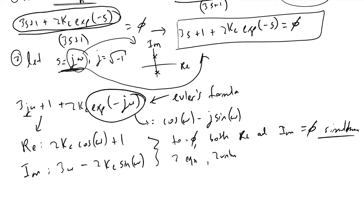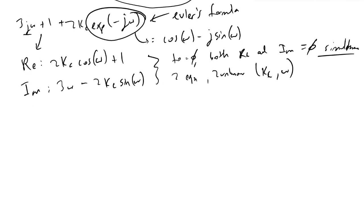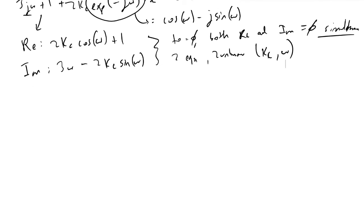Our two unknowns in this case are Kc and ω. What we're going to do is say that 2Kc cosine ω plus 1...